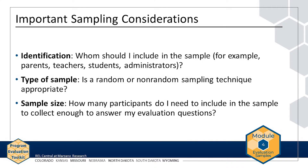As discussed in Chapter 1, it is often not feasible to collect data from an entire population, so a smaller sample must be selected. Important considerations in sampling include identifying whom to include in the sample, deciding whether a random or non-random sampling technique is appropriate, and determining an appropriate sample size — that is, deciding how many participants to include in the sample to collect enough data to answer the evaluation questions.